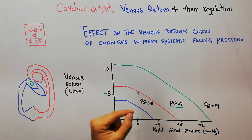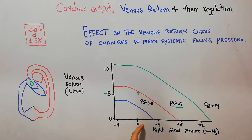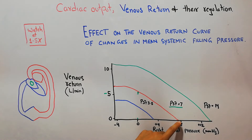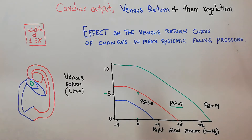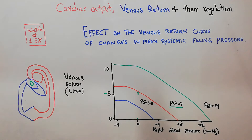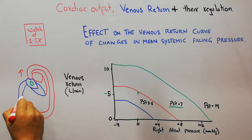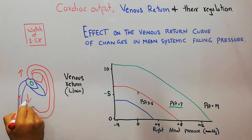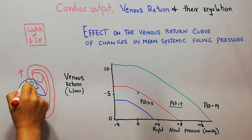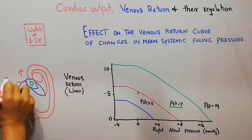We see that when the right atrial pressure starts increasing — 1, 2, 3, 4, 5 — and when it reaches 7 mmHg, the venous return has reached 0 L per minute, from 5 L per minute down to 0 L per minute. Normally the pressure in the right atrium is 0 mmHg, but when it starts increasing, the venous return — the return of blood towards the heart — starts decreasing, and it keeps on decreasing until the pressure in the right atrium has reached 7 mmHg.